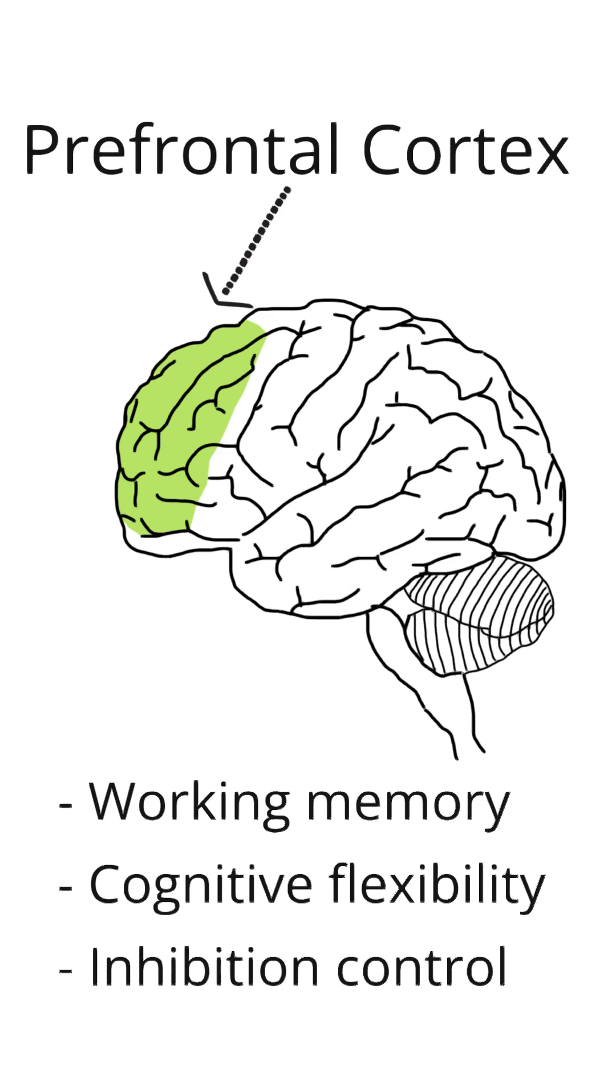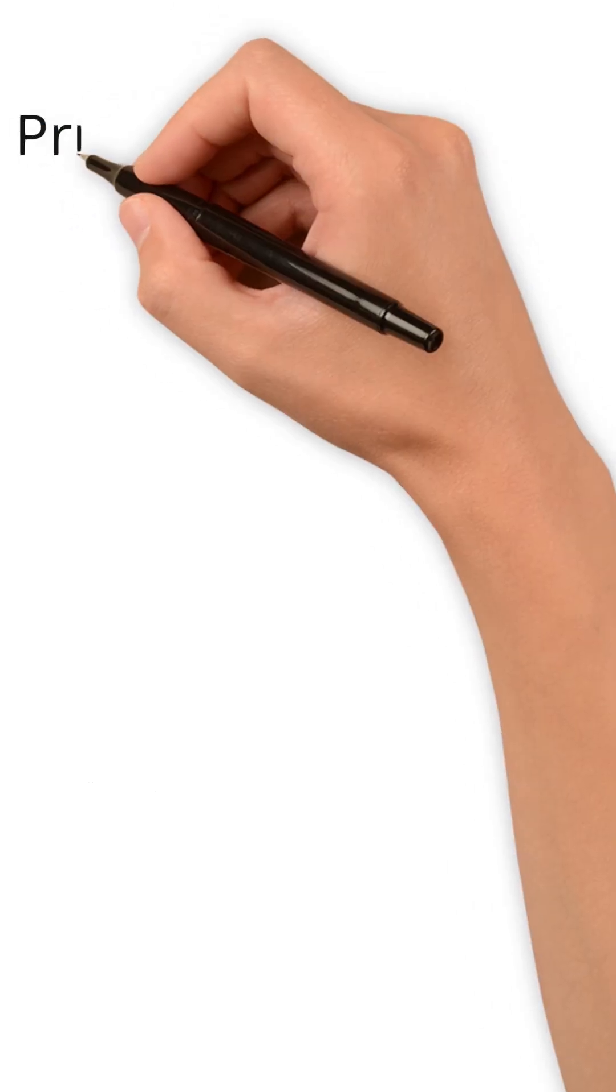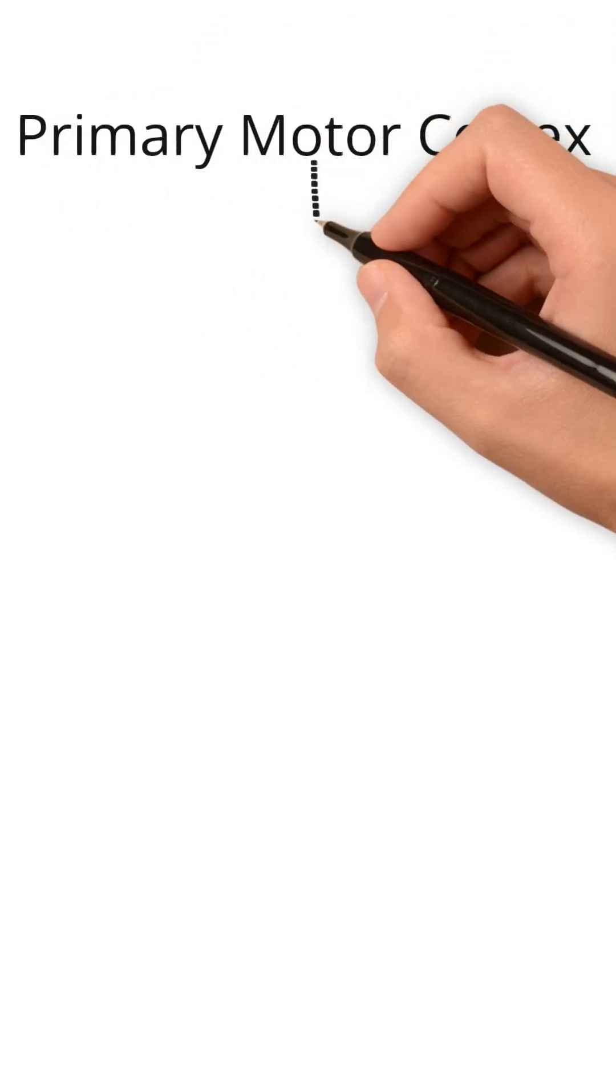Executive functioning also involves inhibition control, which is your ability to control impulsive urges. Another prominent region of the frontal lobe is the primary motor cortex.